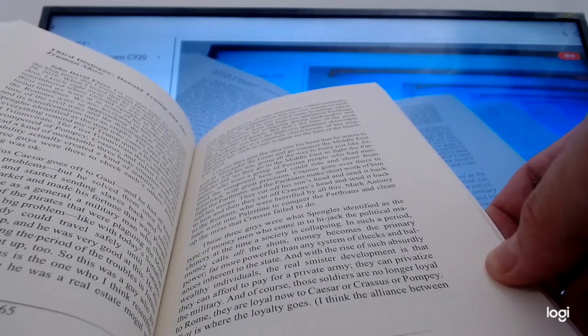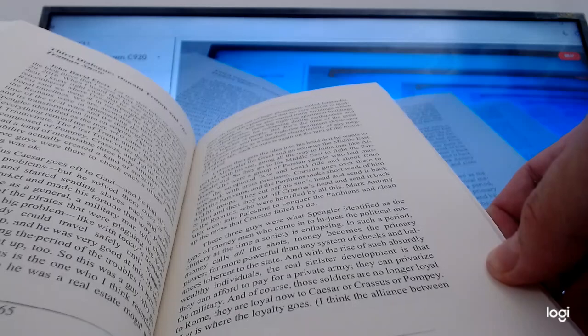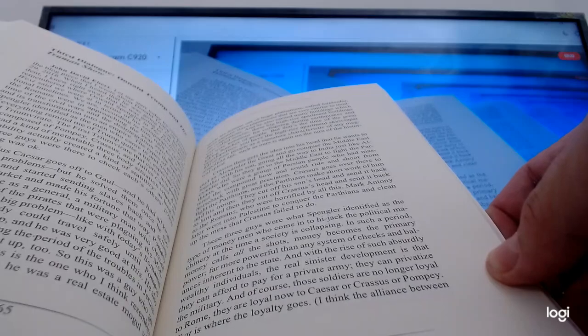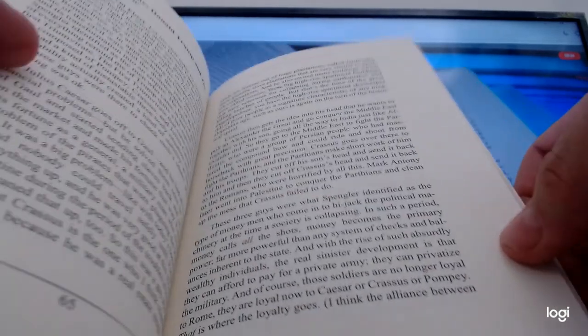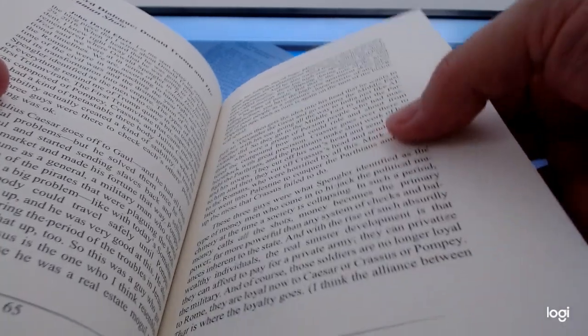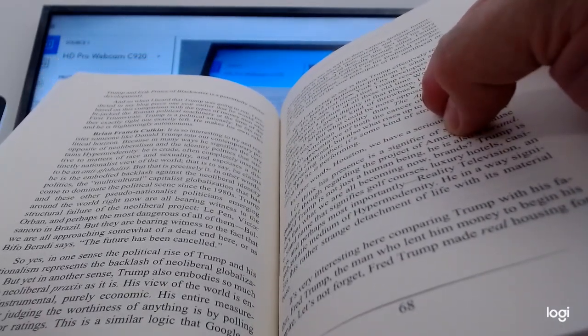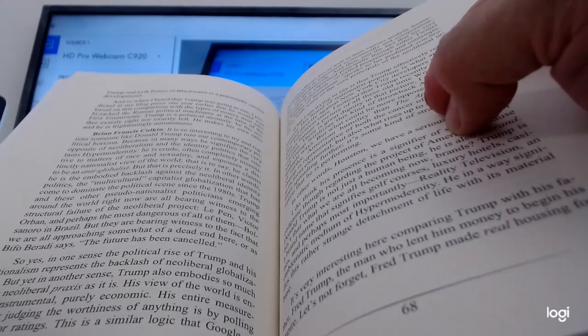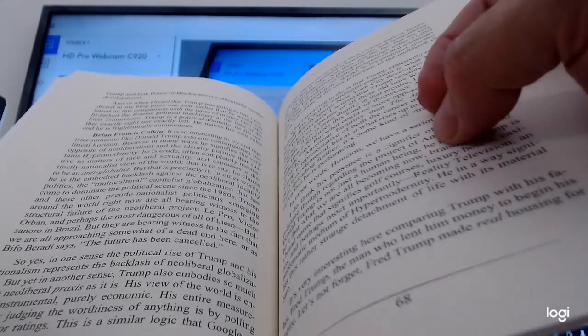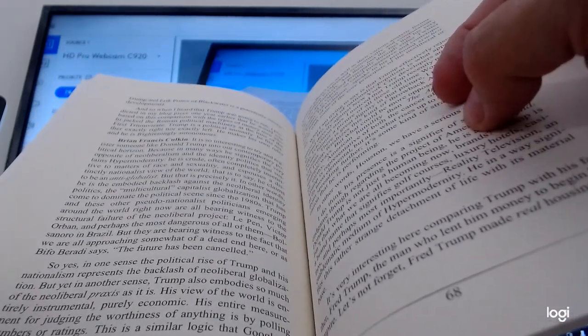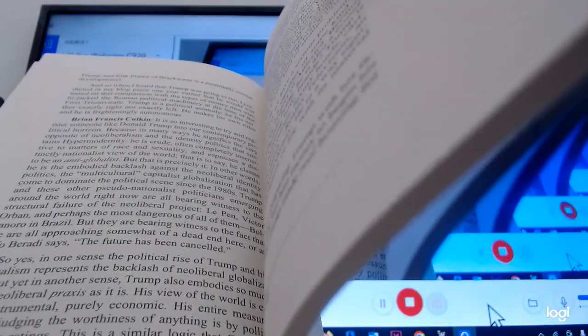And with the rise of such absurdly wealthy individuals, the real sinister development is that they can afford to pay for a private army. They can privatize the military. And of course, those soldiers are no longer loyal to Rome. They are loyal now to Caesar or Crassus or Pompey. I think the alliance between Trump and Eric Prince of Blackwater is a potentially similar development. When I heard that Trump was going to run, I predicted one year earlier that he would win based on this comparison with the money men who hijacked the Roman political machinery.